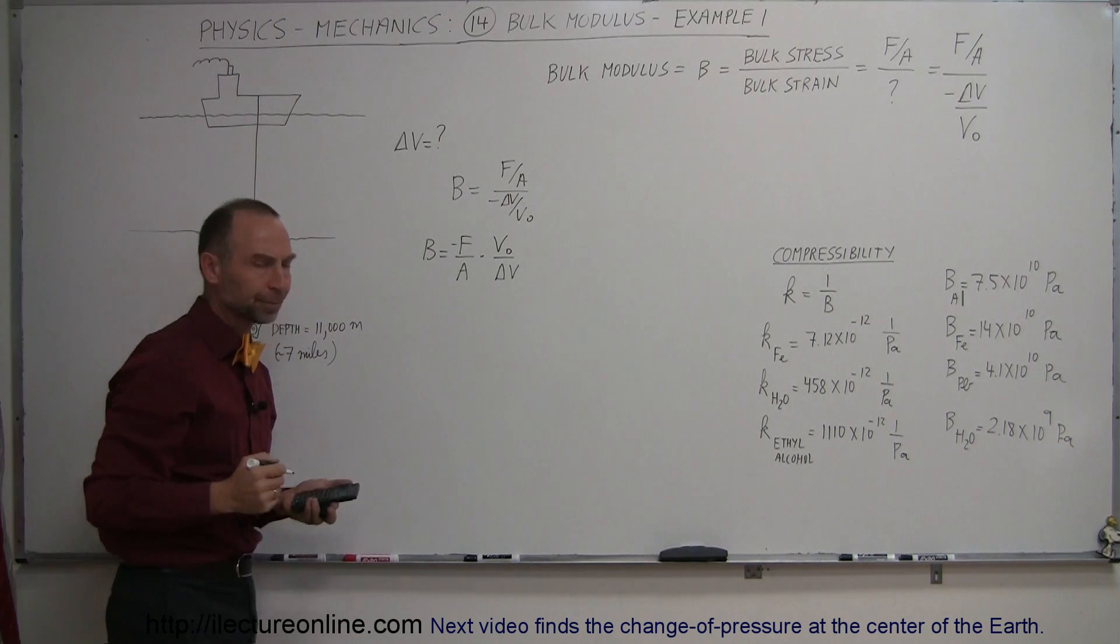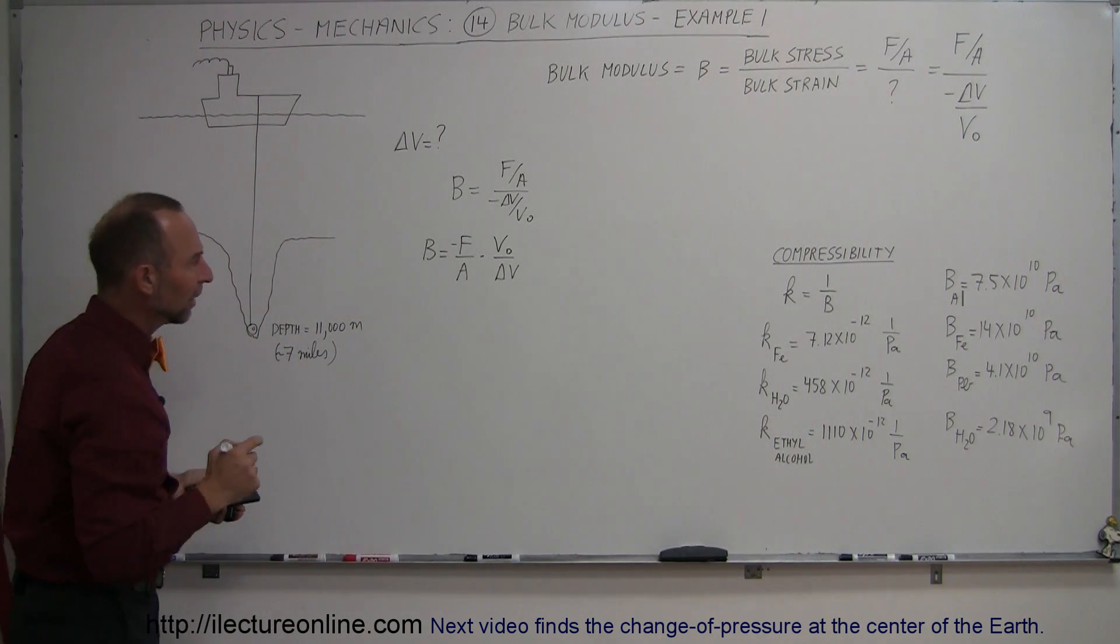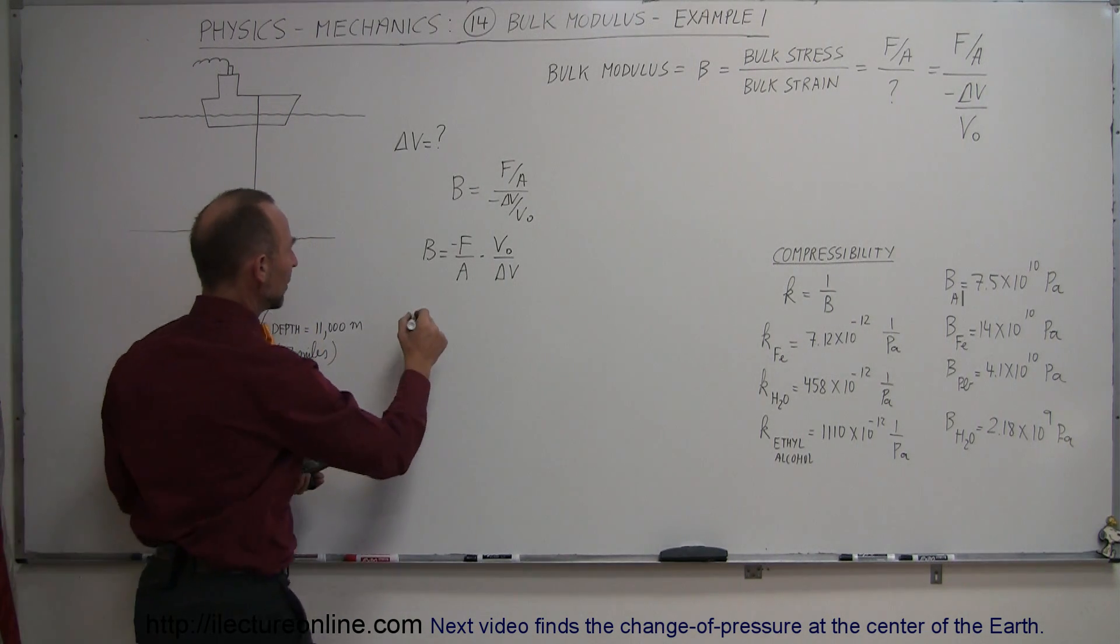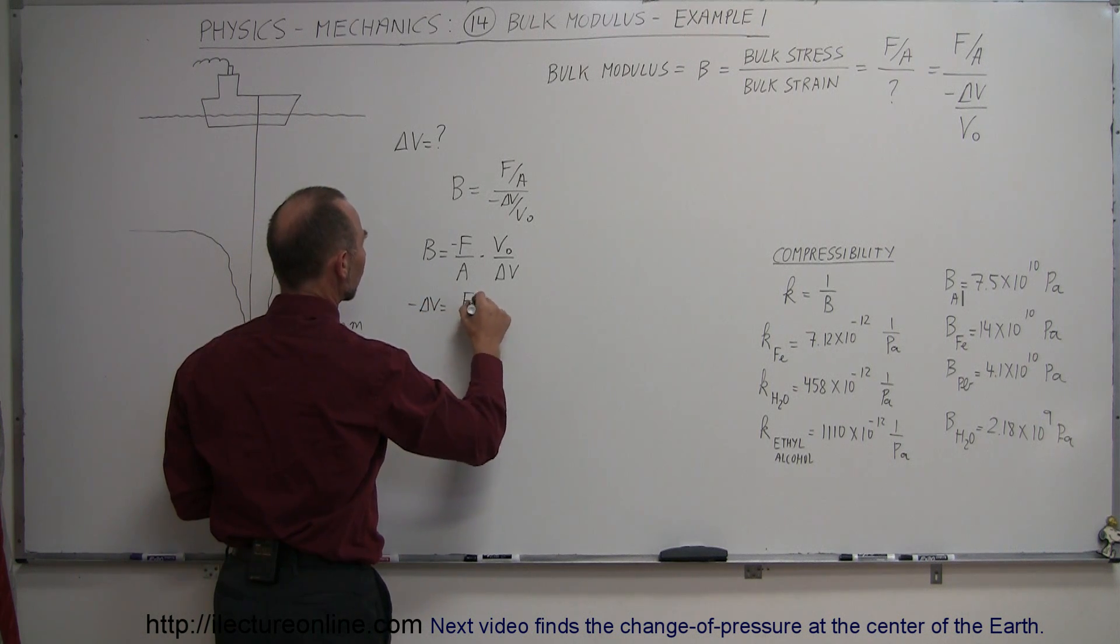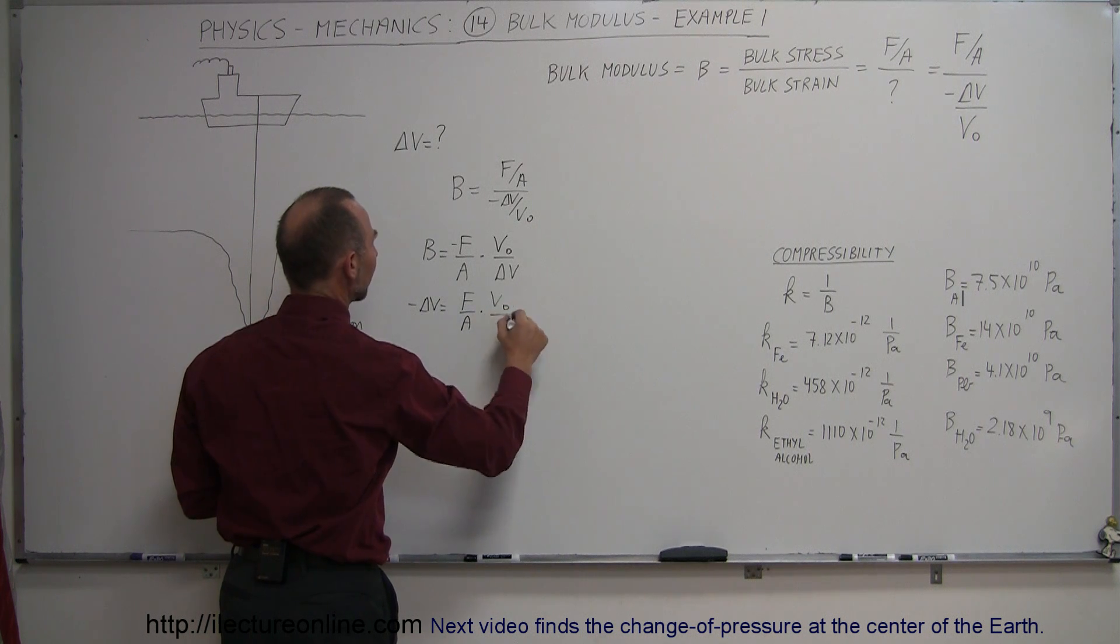And, of course, we want the negative there. Which means that if we solve that for delta V, we get minus delta V is equal to the force per unit area times the original volume divided by the bulk modulus.